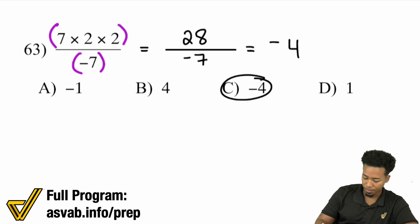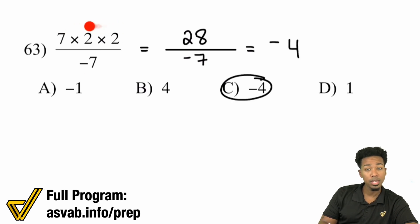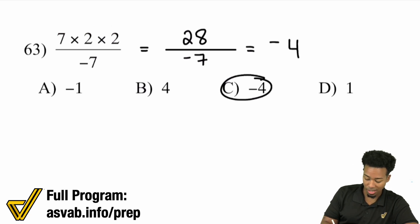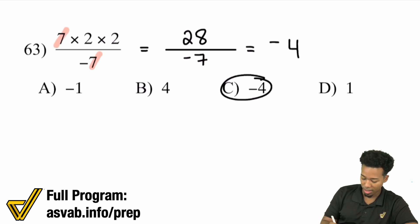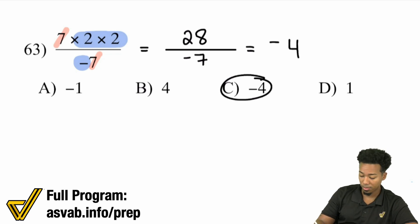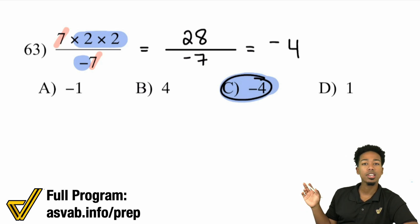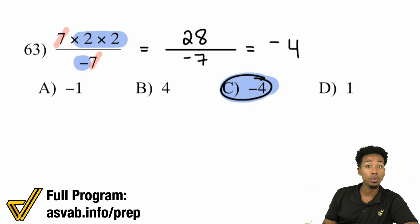Here's another way to do it. When you're multiplying everything together in the numerator, and multiplication and division are opposite operations, if you're multiplying by 7 and dividing by 7, you can cancel those out. All that's left is 2 times 2 with a negative — 2 times 2 is 4, and with a negative, that's negative 4. You can simplify the fraction by canceling the 7 in the numerator with the 7 in the denominator.